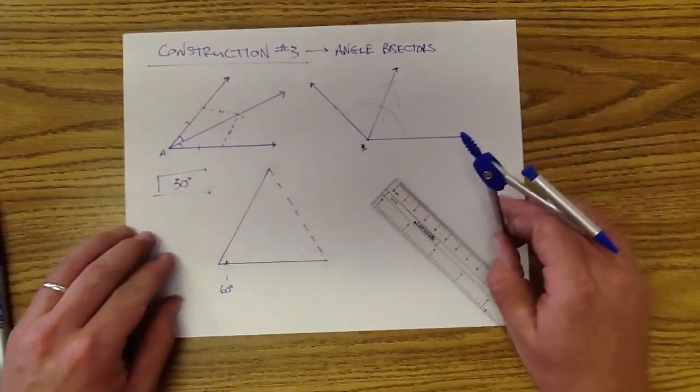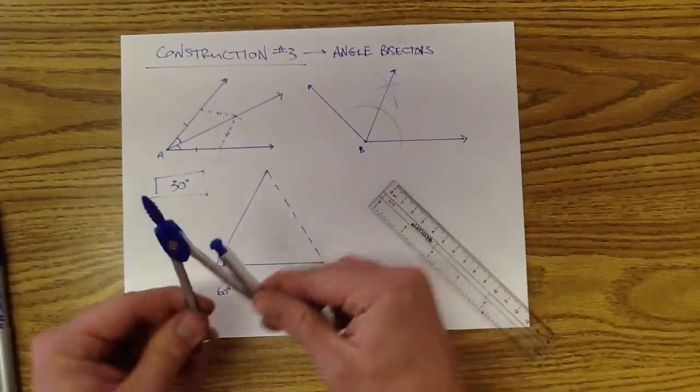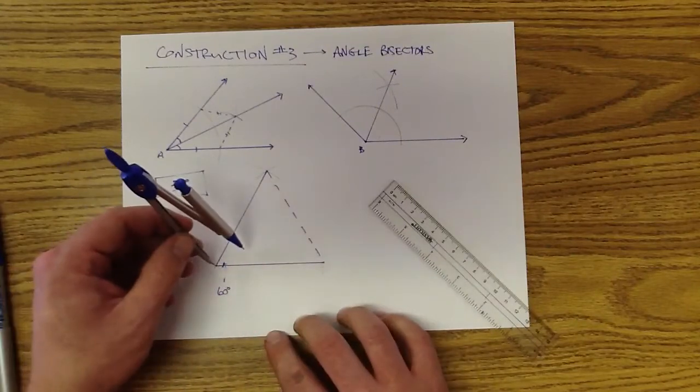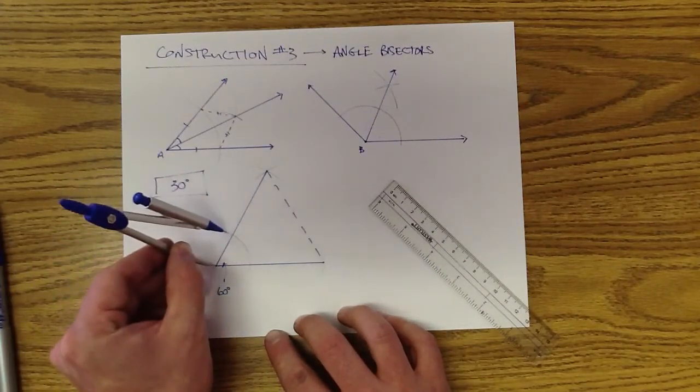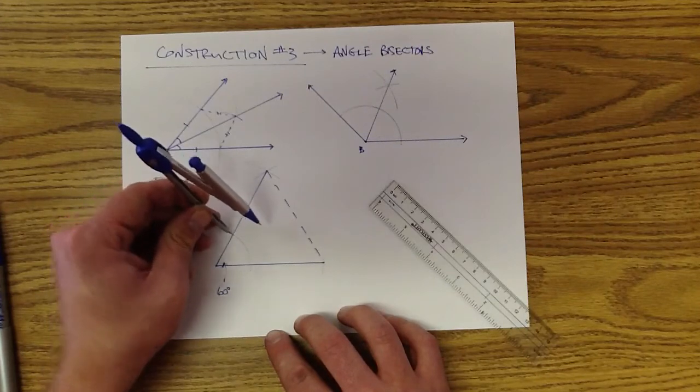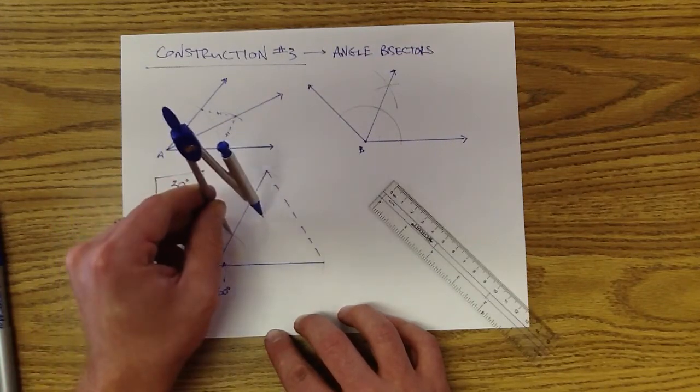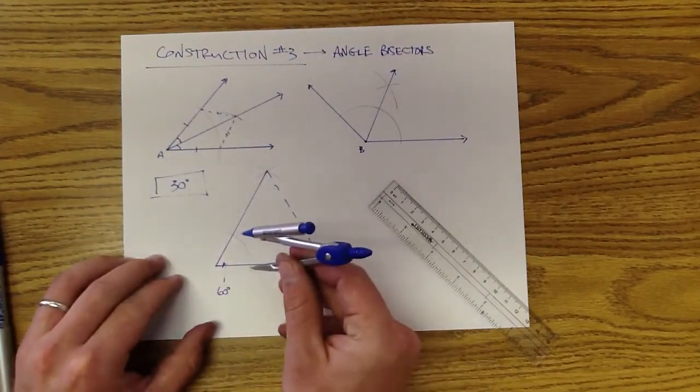So again, using the construction methods for an angle bisector, use your compass. Strike an arc through both sides of your angle. Go about over halfway. Make sure you're going over halfway, otherwise they won't intersect.